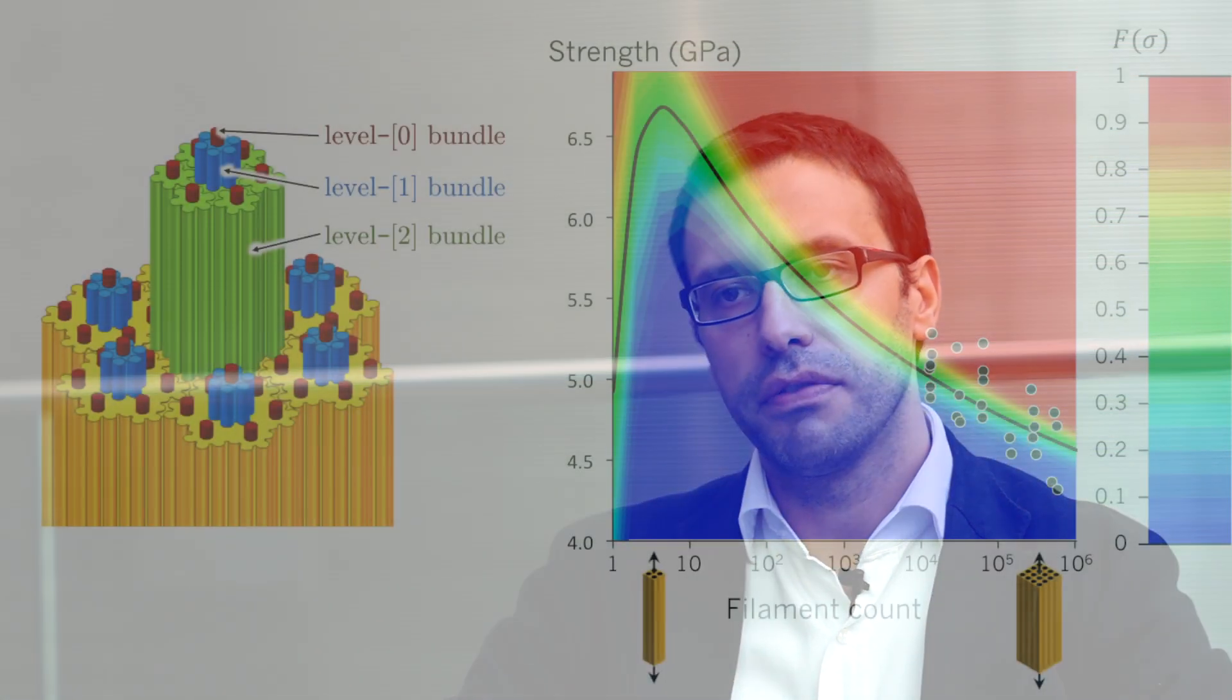This suggests that there should be a size effect in the strength and in the toughness of fiber bundles and of zero degree plies that is related to the formation of these statistically self-affined structures.